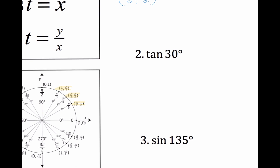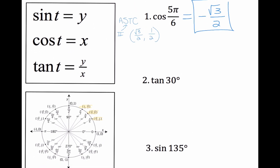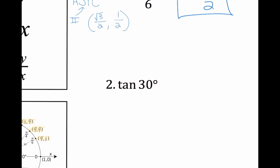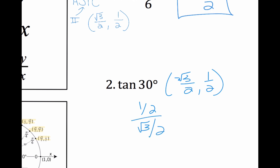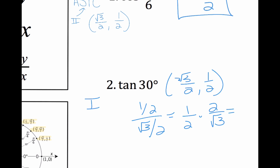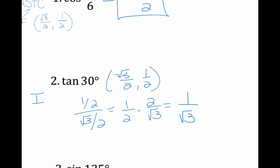For tangent of 30 degrees: my ordered pair for 30 degrees is radical 3 over 2, 1 half. Tangent we know is y over x. I know this is in quadrant 1, so everything is positive. 1 half times the reciprocal — 2 over radical 3 — gives me 1 over radical 3, or rationalized as radical 3 over 3.